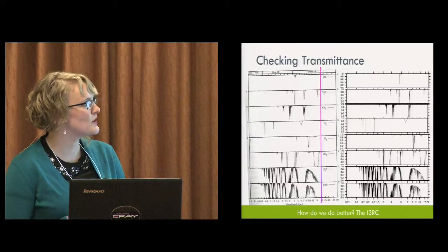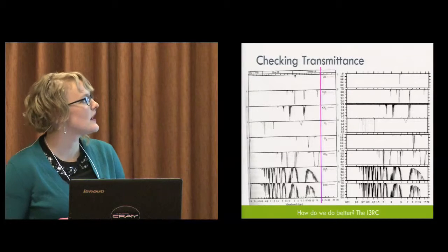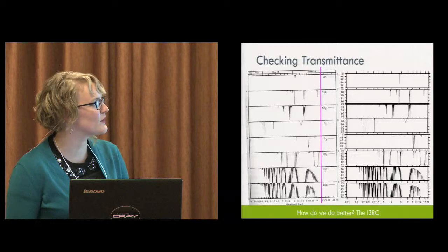So over here on this side is a sort of canonical plot of the transmittance through the atmosphere for a variety of gases, the component gases, and then the total. This is from a textbook. You can see it in pretty much any atmospheric radiative transfer textbook.